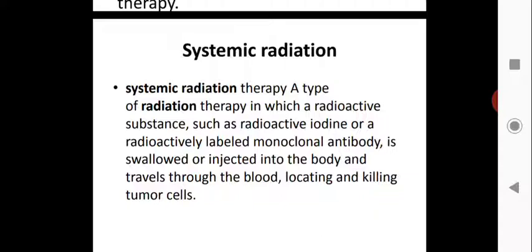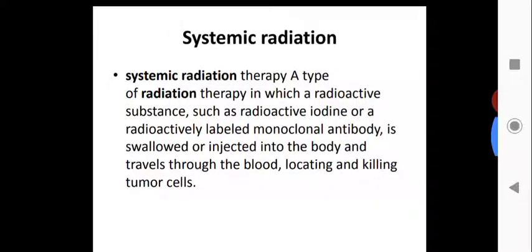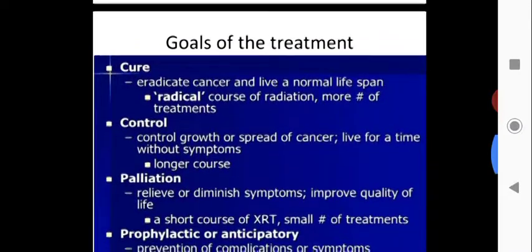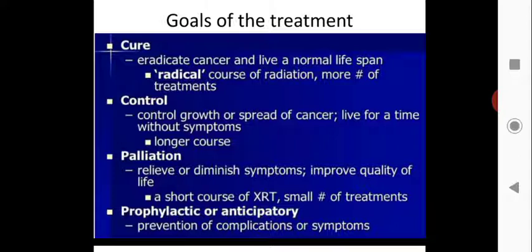The goals of radiation therapy treatment are: cure, control, palliation, and prophylactic. Cure means to eradicate cancer and allow the patient to live a normal lifespan - this is a radical course of treatment. Control means to control the growth or spread of cancer so the patient can live for a time without symptoms.